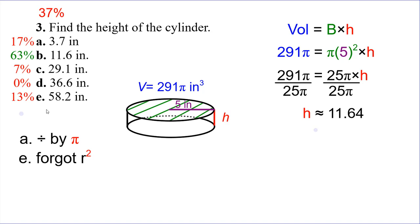Most of you guys got that right, but a common wrong answer was A: if you divided by pi as well, not noticing that the two pi's cancel each other out. So if you did 291 divided by twenty-five and also divided by pi, that would give you three point seven. The other wrong answer is E: you would get that if you forgot to square the radius. So instead of twenty-five pi, you did just five pi. So if you do 291 divided by five instead of twenty-five, that gives you fifty-eight point two.